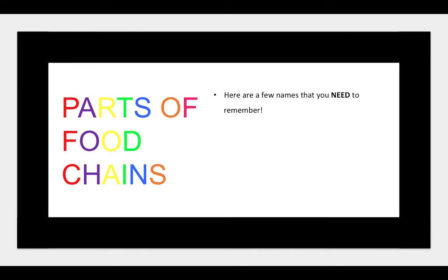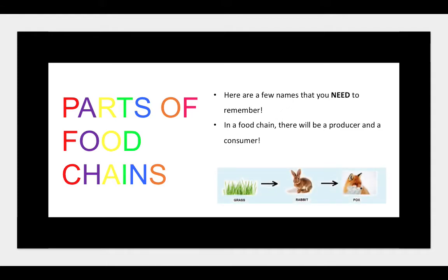So, parts of food chains. Here are a few names that you need to remember. In a food chain there will be a producer and a consumer. The plant at the beginning of the food chain — so grass or lettuce or flowers — is the producer, because it's making the food that something else is going to eat. All animals in the chain are consumers, as they depend on eating other things.